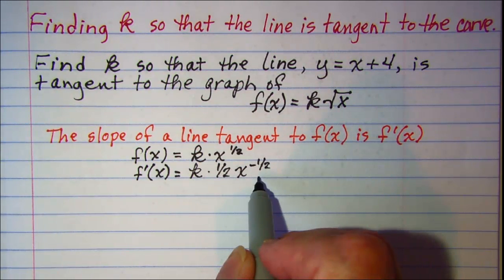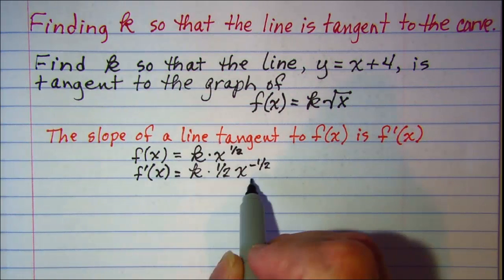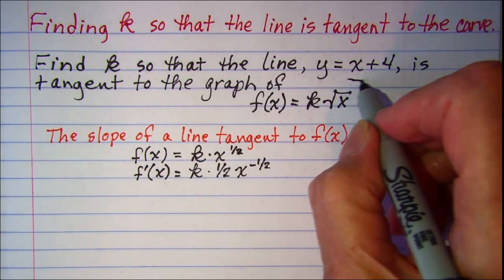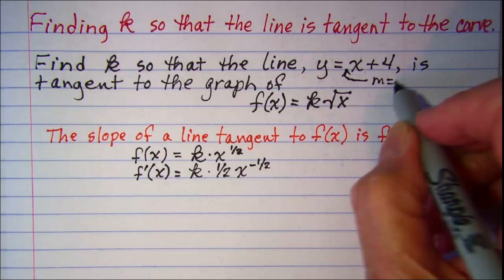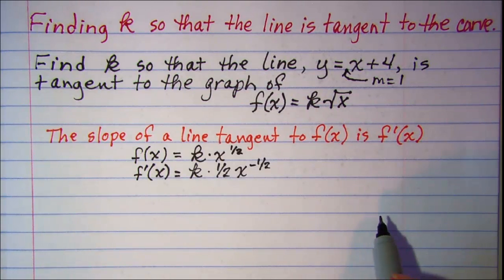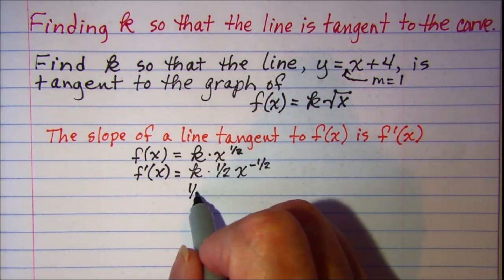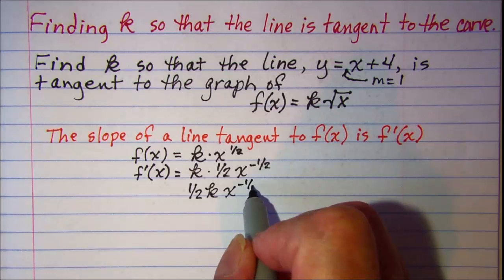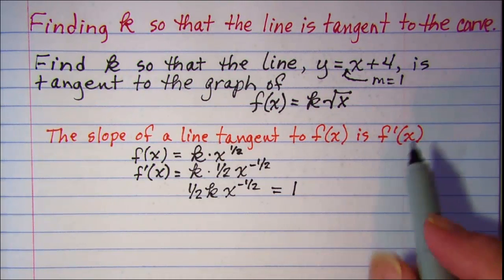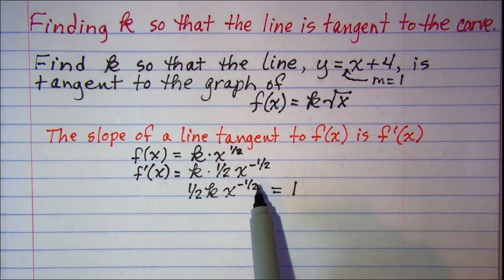So now this derivative, in other words this slope to the function, needs to be equal to one. The slope of our line is one. So one half k x to the negative one half needs to be equal to one in order for this line to be tangent to our function.